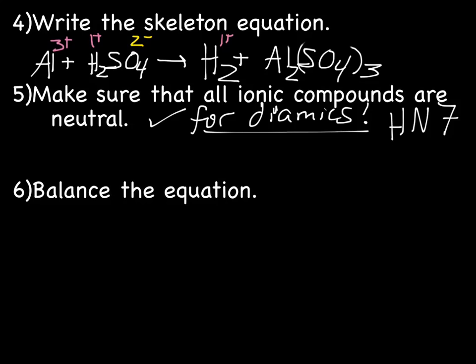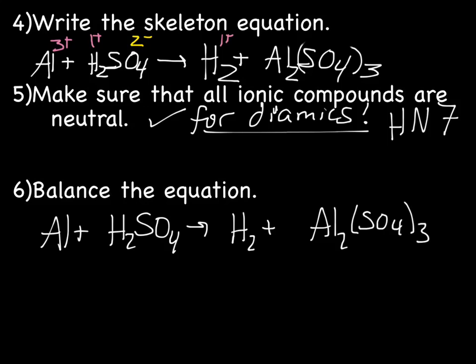Al plus H2SO4 produces H2 plus Al2(SO4)3. We've got aluminum, we've got hydrogen, and we've got SO4, and it's a polyatomic. Because we see it on both sides of the equation, we can just write it as SO4. For aluminum, we have 1 on the reactant side, 2 on the product side. Hydrogen, 2 on the reactant side, 2 on the product side. And sulfate, 1 on the reactant side, and 3 on the product side.